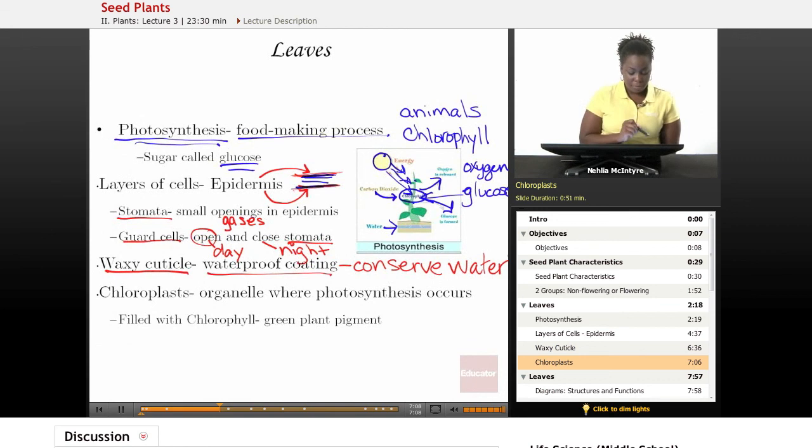Another characteristic of leaves is that they hold special organelles or structures called chloroplasts. These chloroplasts are small organelles where the photosynthesis actually occurs. Chloroplasts hold the chlorophyll for the plant. The chlorophyll is a green plant pigment, which is why we have that color of green for our leaves and our stems and our plants.